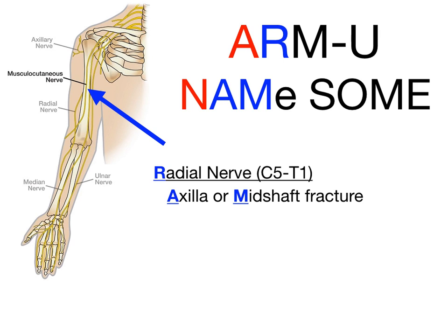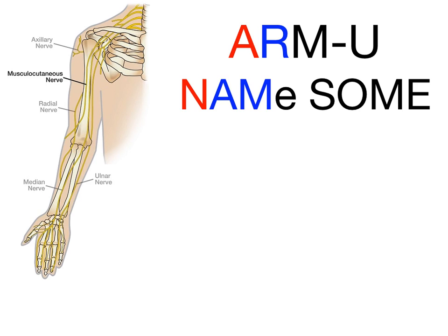When the radial nerve comes out through the axilla, it passes over the mid-shaft of the humerus. You can get an injury there as well if you fracture the humerus at the mid-shaft. So R in 'Arm U,' A for axillary injury, and M for mid-shaft fracture.